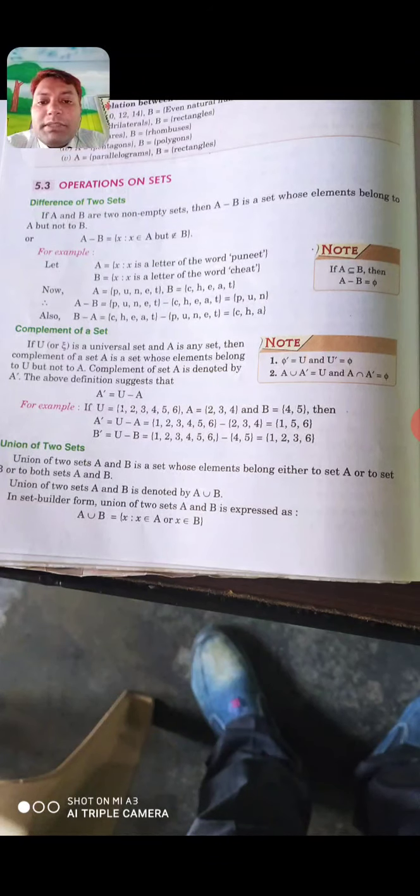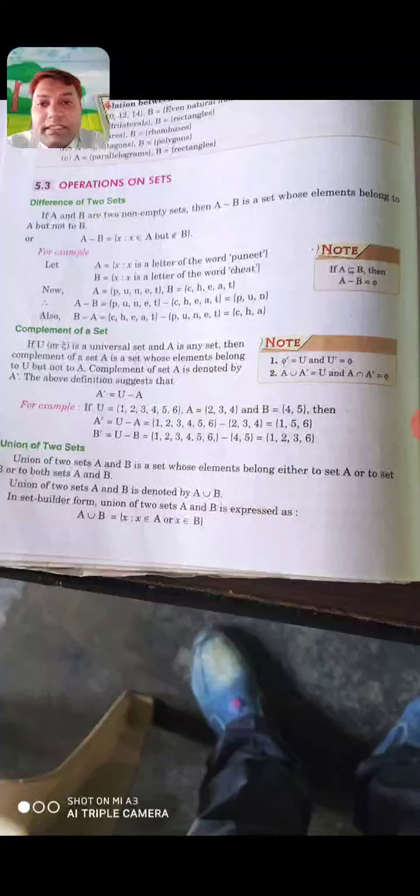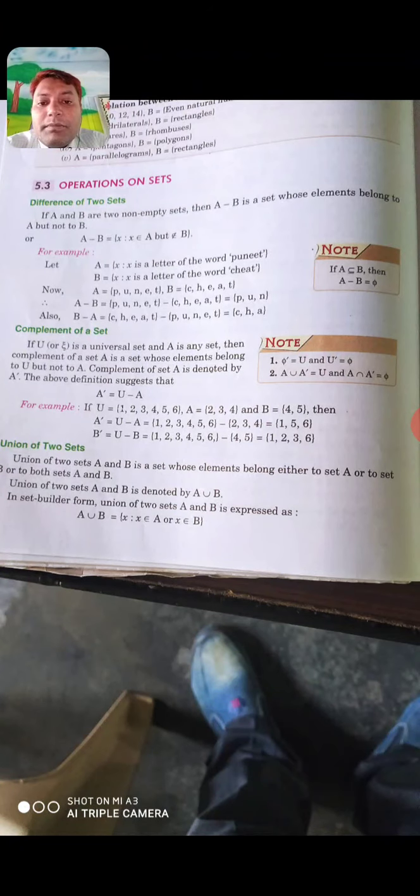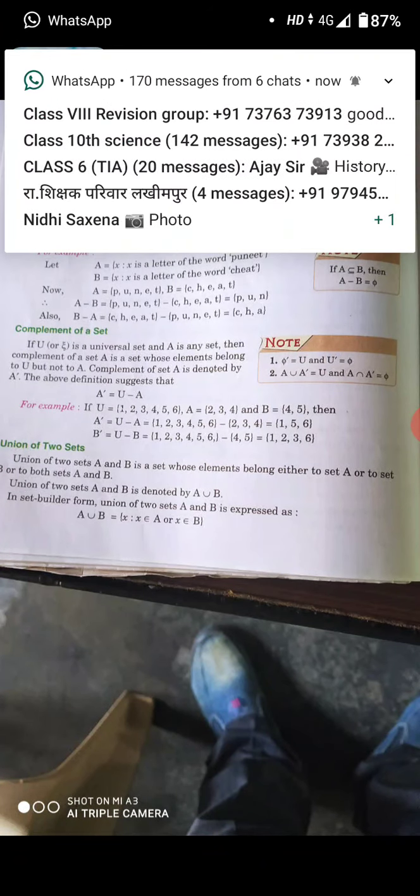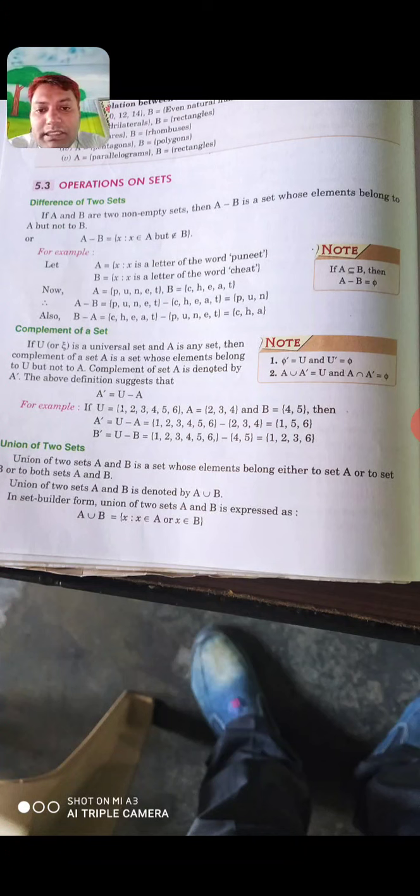B, set B ho ga, C, H, E, A, T. A minus B are elements present in a set which are present in set A only. So P, U, N, these characters are present in set A but not in set B. So these elements is called A minus B.